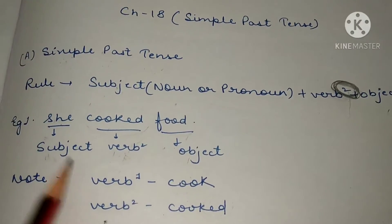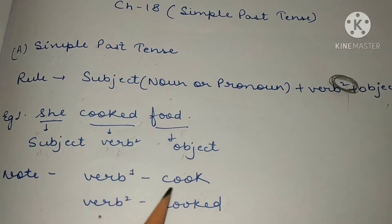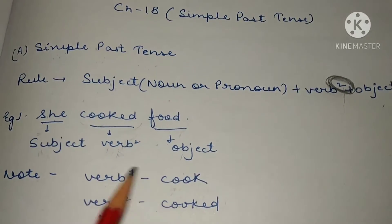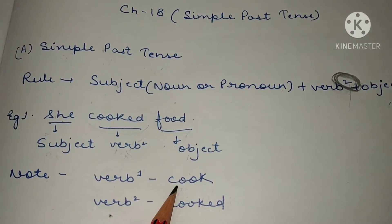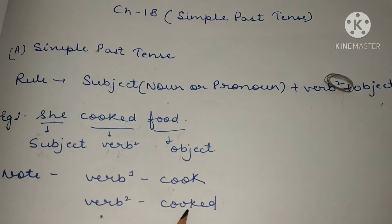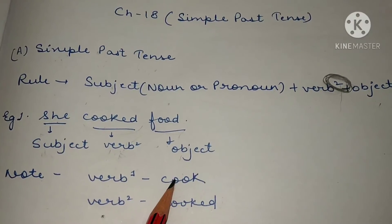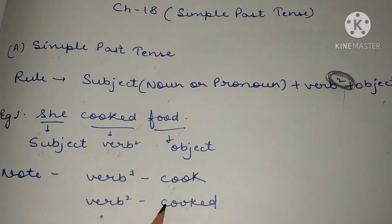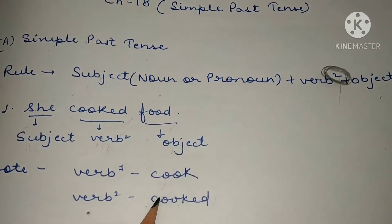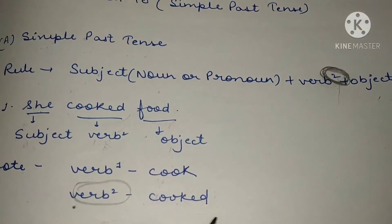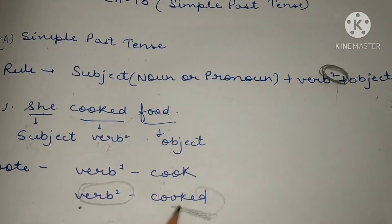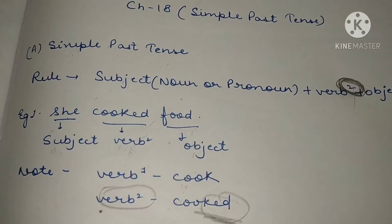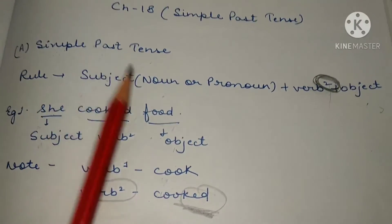Now see: 'cook' is your verb — verb ki first form 'cook' hoti hai. And verb ki second form hoti hai 'cooked.' When '-ed' is added to a verb, that means it is verb ki second form. So in Simple Past Tense, the rule is: Subject + Verb 2nd form + Object.